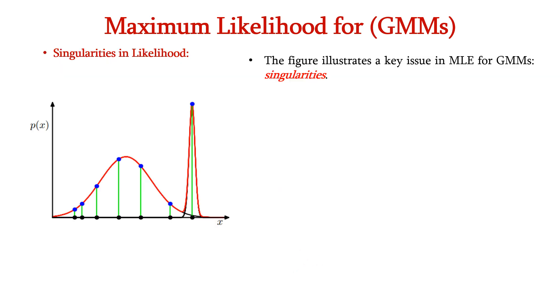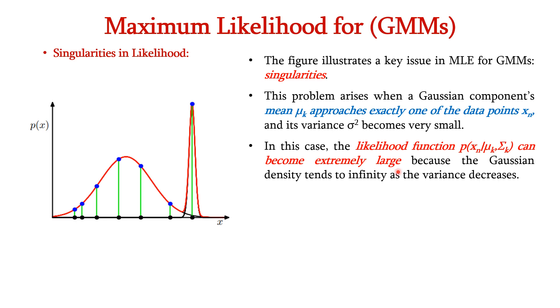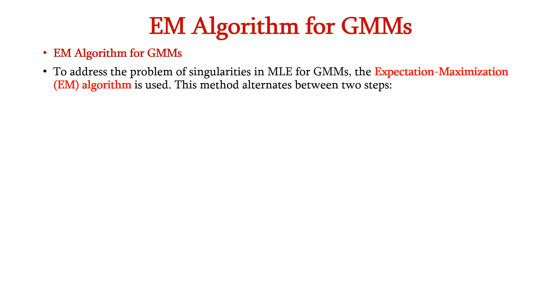A key issue in MLE for GMMs is singularities, as represented in this diagram. This problem arises when a Gaussian component's mean μk approaches exactly one of the data points xn. We can see that the mean is approaching exactly one data point, and because of this its variance will become very small. In this case, the likelihood function can become extremely large because the Gaussian density tends to infinity as the variance decreases, causing the log likelihood to go to infinity, leading to a non-optimal and practically meaningless solution.